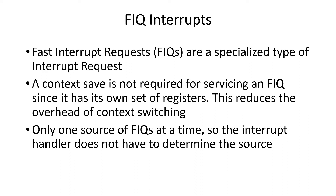There are different types of interrupts on the ARM processor. The fast interrupt request is a specialized type of interrupt. The context does not need to be saved — that is, you don't have to save the registers and other information — because it has its own set of registers to operate with. This saves the overhead of saving and restoring registers. And since there's only one source, you don't have to figure out what type of interrupt it was.